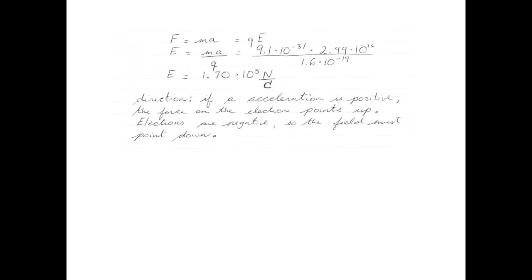We found that the acceleration was positive, which means the force on the electron is also positive, meaning pointing up. The electrons are negative, so the field must point down. Remember, the electric field points in the same direction as the force on a positive charge. Therefore, if we're dealing with negative charges, the field and the force are in opposite directions.